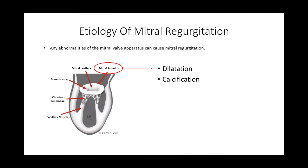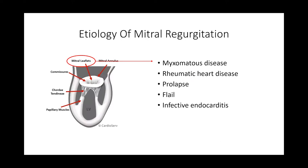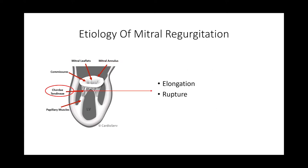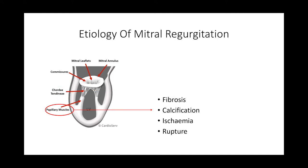Any abnormality of the mitral valve apparatus can cause mitral regurgitation. Starting with the mitral annulus, any dilatation or calcification can cause MR. Moving to the mitral leaflet — very important for diagnosing primary MR — degenerative or myxomatous disease, rheumatic heart disease, flail, prolapse, or infective or inflammatory disease of the leaflets can cause MR. For the chordae tendineae, any rupture or elongation can cause it, as can papillary muscle ischemia, rupture, calcification, or fibrosis.